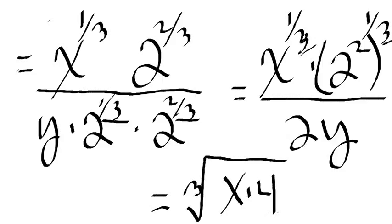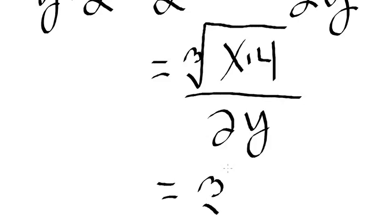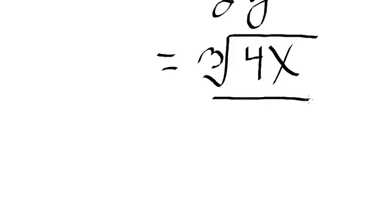Two squared is four. Yes it is. It's all over two Y. Of course we wouldn't rewrite, we'd write it like four X. Okay, over two Y.